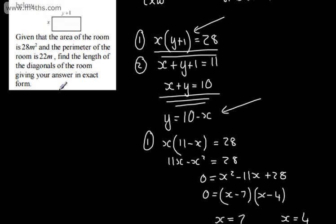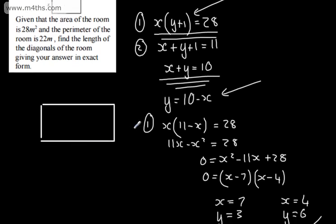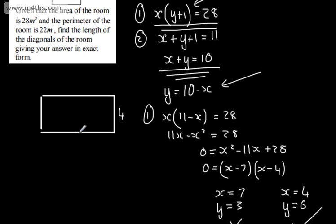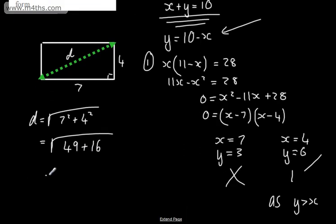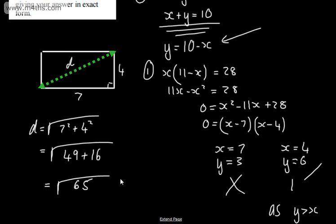Drawing the rectangle, we can put on the dimensions. With x equals 4 and y equals 6, the side y plus 1 equals 7. We want the length of the diagonal, so using Pythagoras' theorem: d equals the square root of 7 squared plus 4 squared, which is the square root of 49 plus 16, giving the square root of 65. That's 13 times 5 under the root, so it won't simplify further.